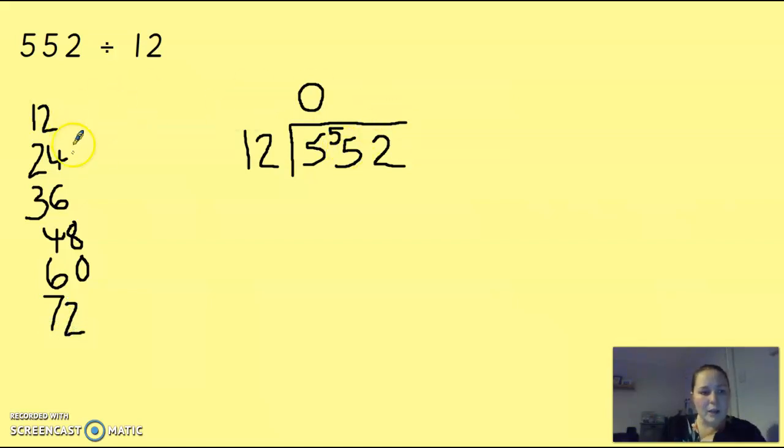So, 55, my closest one is 48. That's 4 lots of 12, and that leaves a remainder of 7. Then 12 into 72, I can see that's in my times tables, my 12 times table. So, that's 1, 2, 3, 4, 5, 6 lots. So, that fits neatly with no remainder.